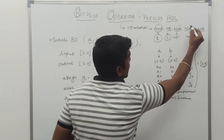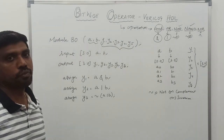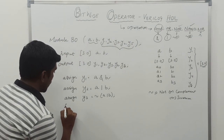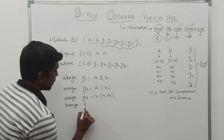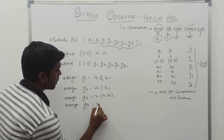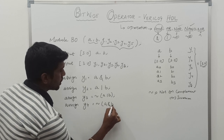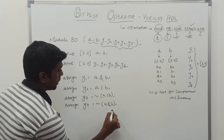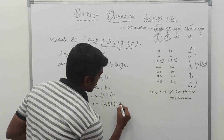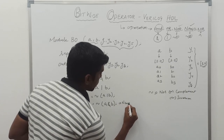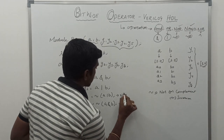The fourth one is NAND operation — just taking complement of AND operation. Assign Y4 equal to NOT of A AND B. So this is a NAND operation. This one is NOR operation, this one is OR operation, and this one is AND operation.